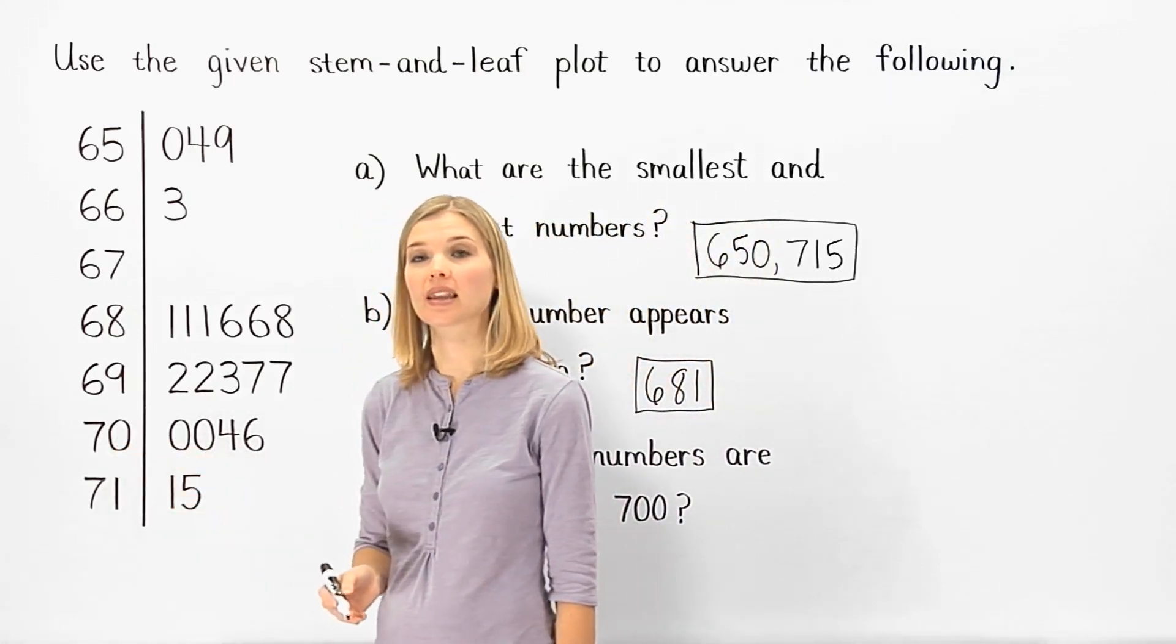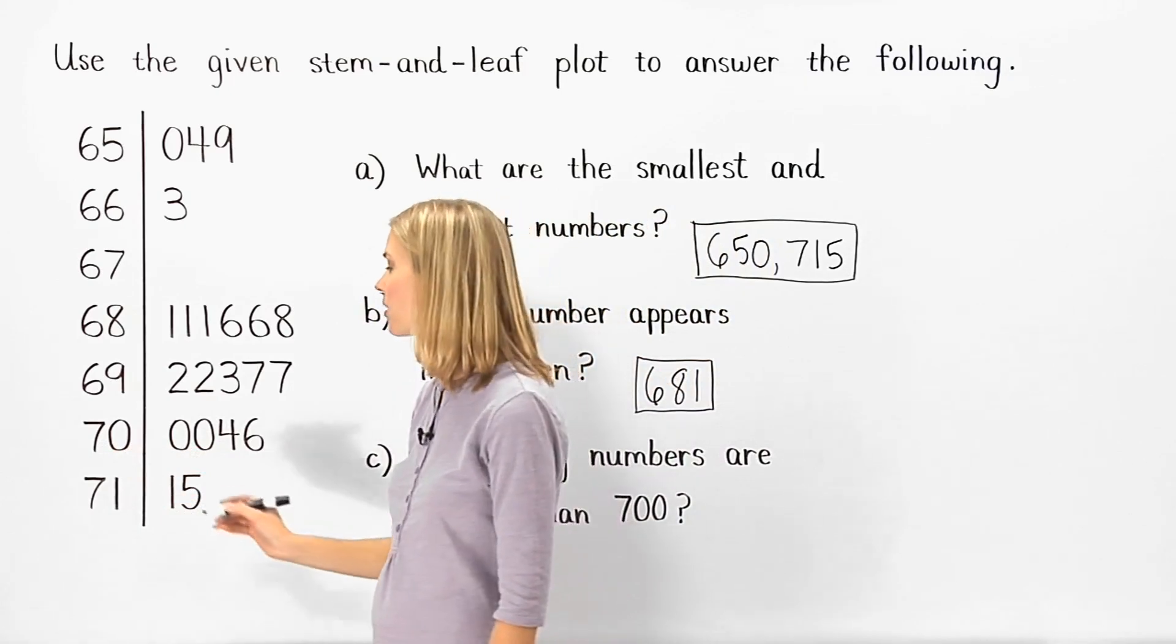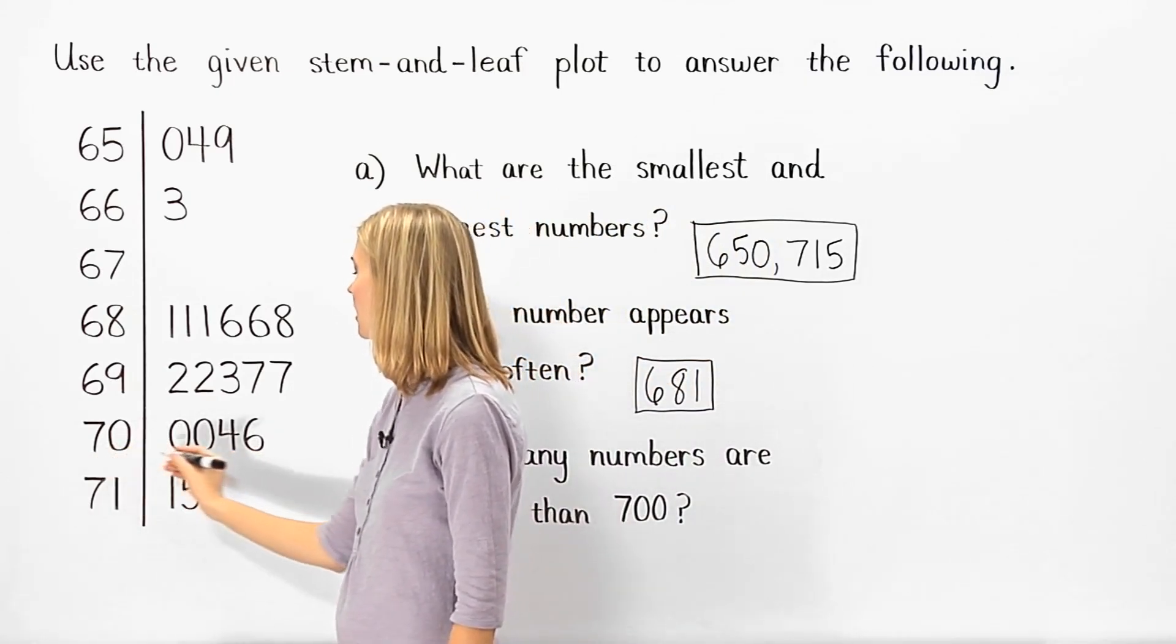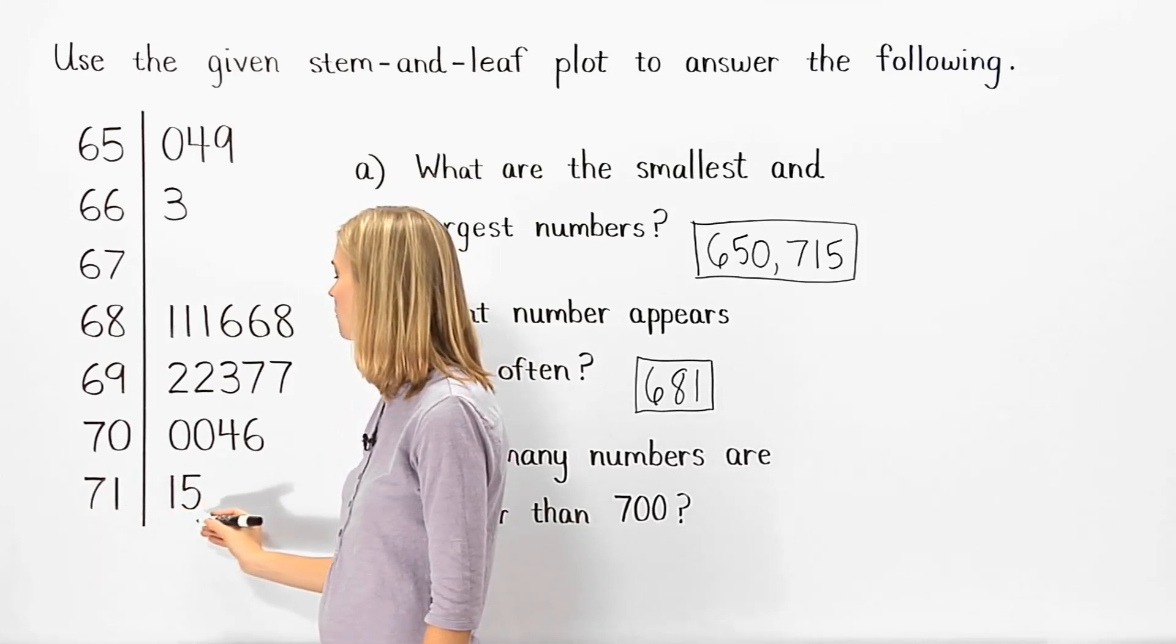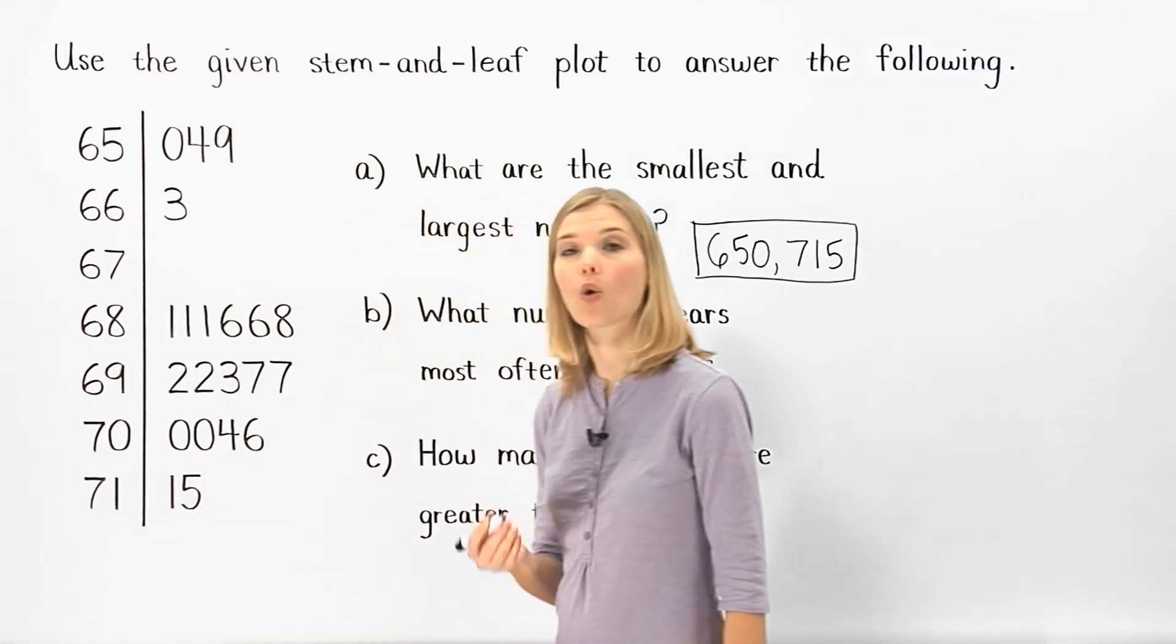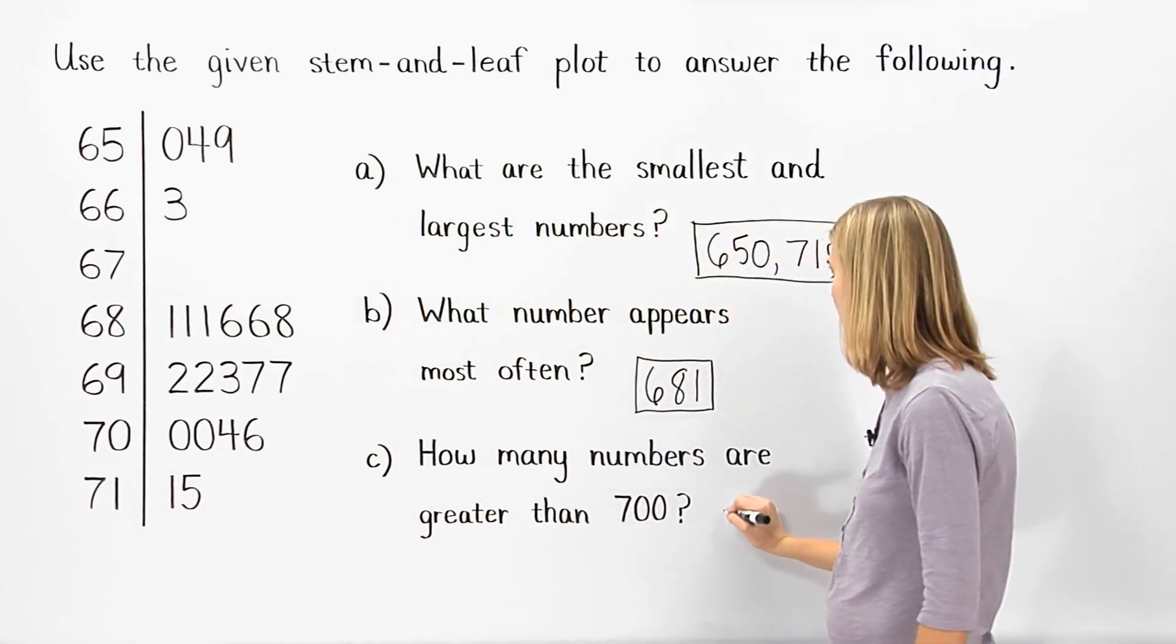Now we can see that the numbers that are greater than 700 are 704, 706, 711, and 715. So there are four numbers that are greater than 700.